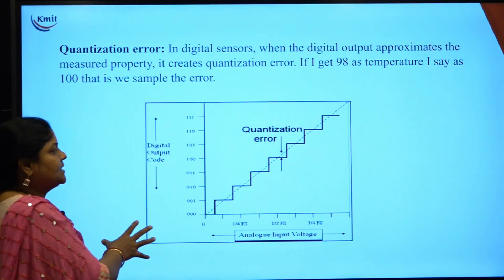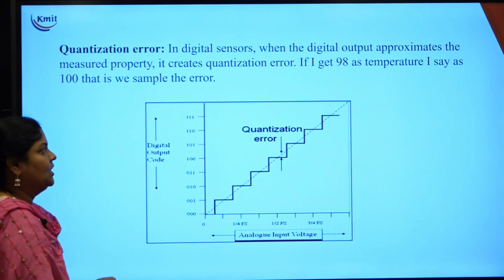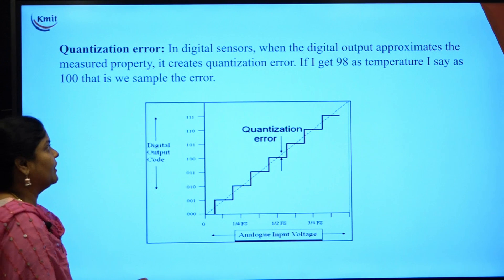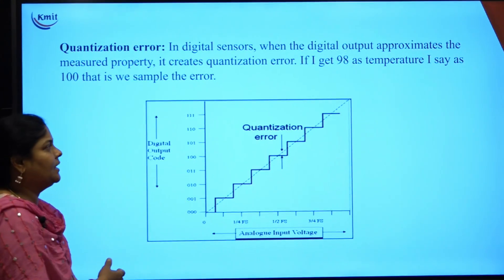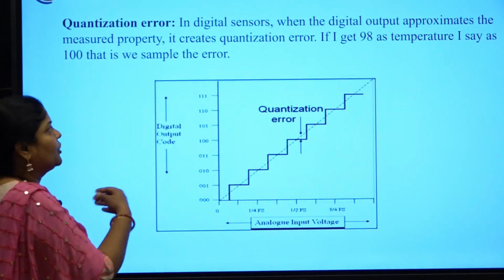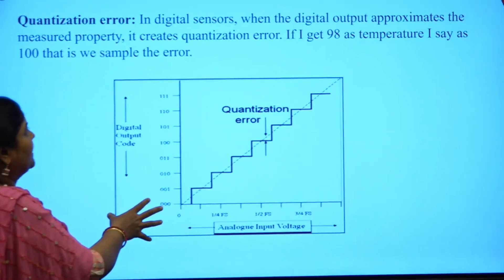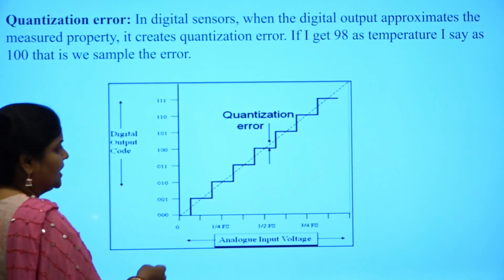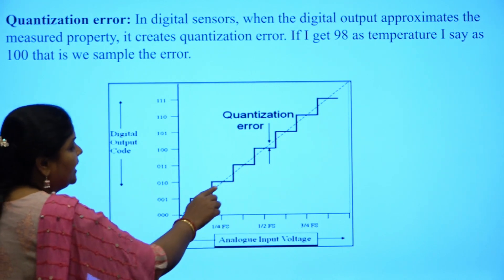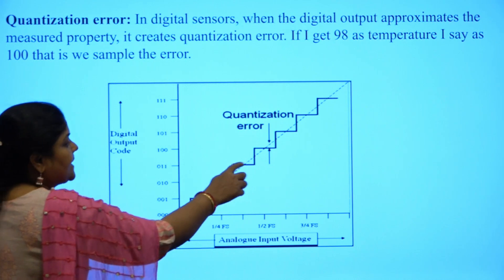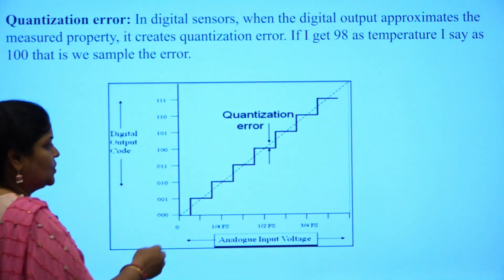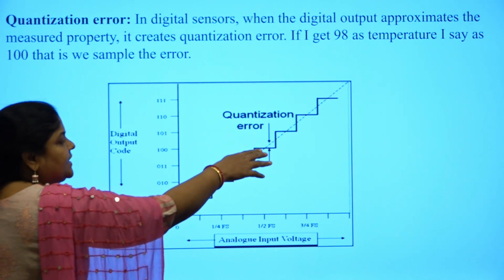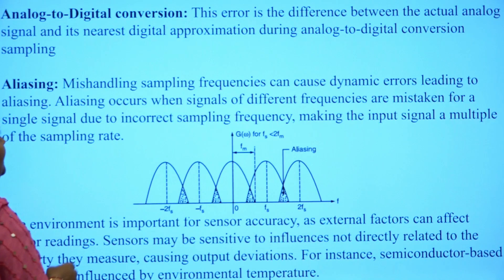The next type is quantization error, which is seen in digital sensors. While an analog sensor signal can be expressed as a square or rectangular wave, converting the same to a digital representation is complex. This conversion depends on sampling rate. In the diagram, the dotted line represents the analog value and the stepwise graph represents the digital value. If the step is below the analog line, it is a negative percentage; if above, it is a positive percentage.